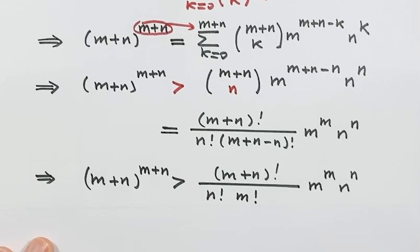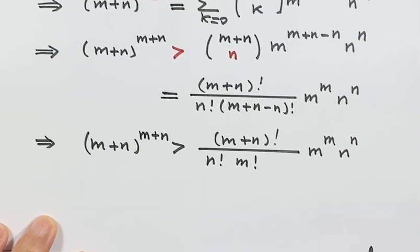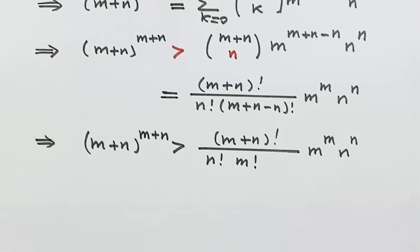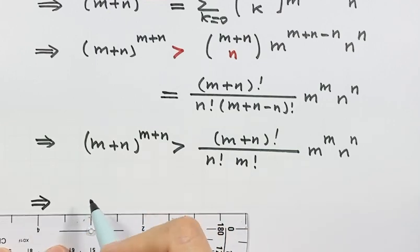So we got this inequality. To get the final result, we need to rearrange some terms. We need both sides divided by this number, then this term goes down here, then both sides multiplied by this term, both sides divided by this term.